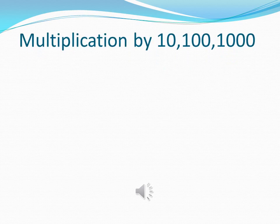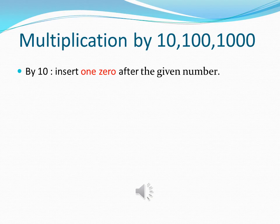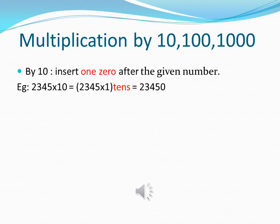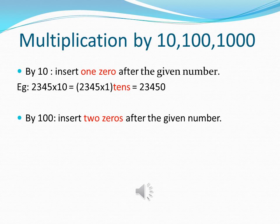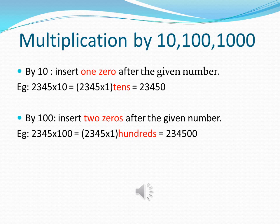Multiplication by 10, 100, 1000. Suppose we want to multiply by 10, we will insert 1 zero after the given number. For example, 2345 multiplied by 10, simply the answer will be 23450. If we want to multiply by 100, we will repeat the same procedure but we will insert 2 zeros here. That means, for example, if a number 2345 has to be multiplied by 100, then the answer will be 234500.